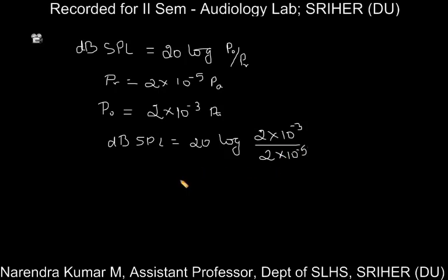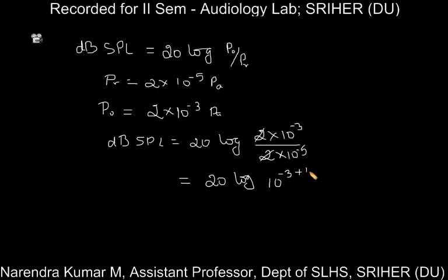Now we need to simplify this equation. The 2 in the numerator and 2 in the denominator cancel out. We have 10⁻³ in the numerator and 10⁻⁵ in the denominator. When the denominator goes to the numerator, the exponential power changes sign, so minus 5 becomes plus 5. That makes the equation 20 log(10⁻³ × 10⁺⁵) = 20 log(10²).